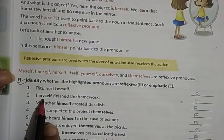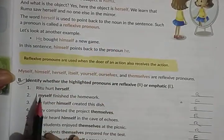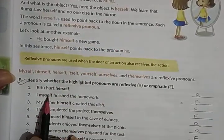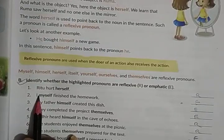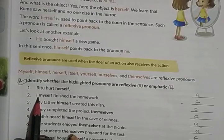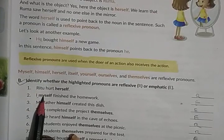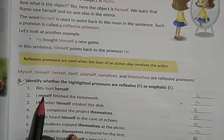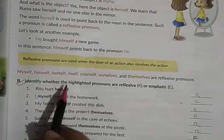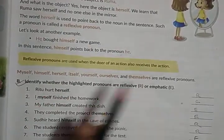'I myself finished the work.' Here 'myself' is emphasizing 'I.' I is a pronoun, and when a pronoun is used to emphasize — lay stress on — the noun or pronoun, it is emphatic pronoun. So 'myself' will be emphatic pronoun.